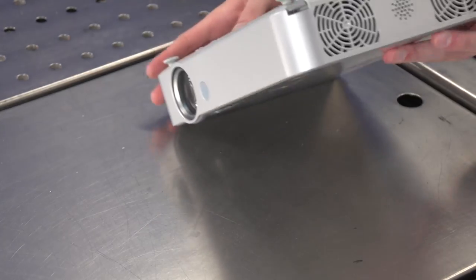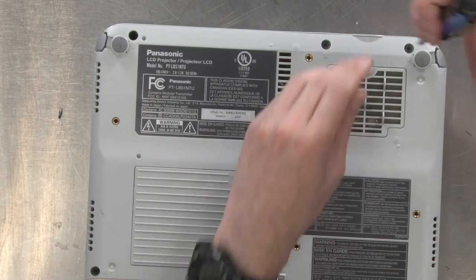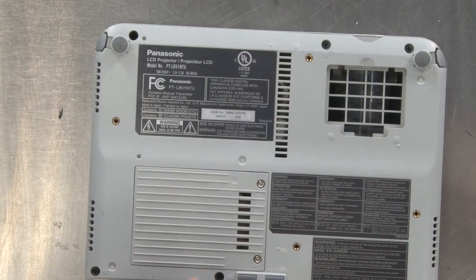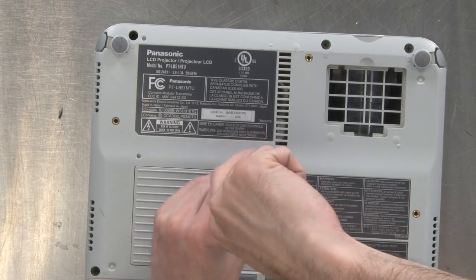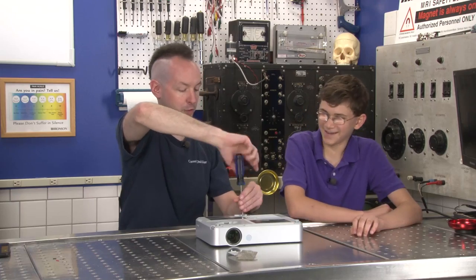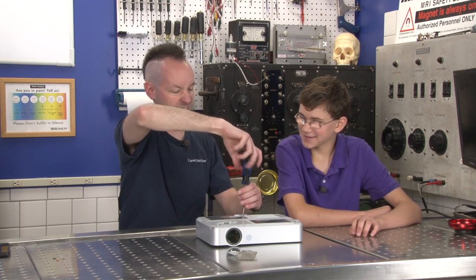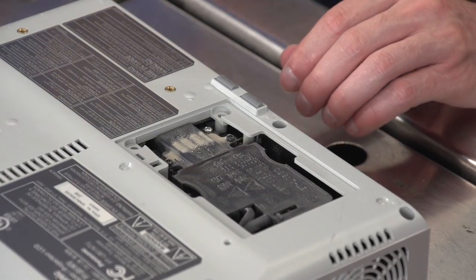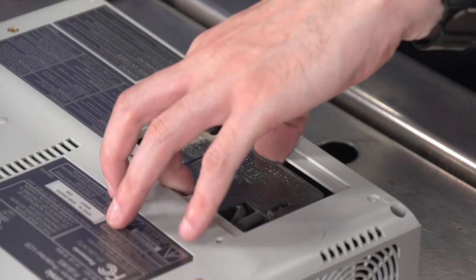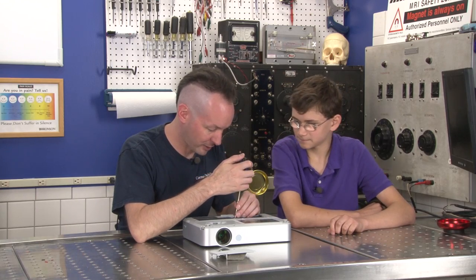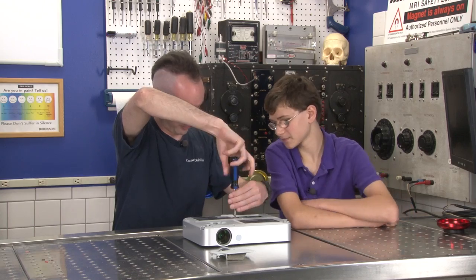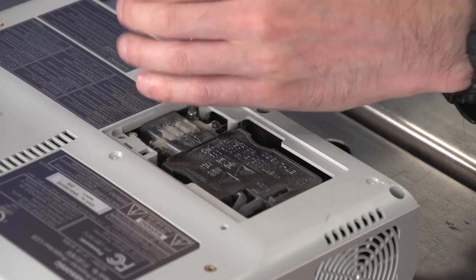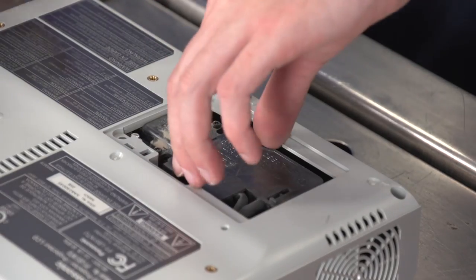So this is a Panasonic PT-LB51NT and you and I get to take it apart. So as always we flip it over and this is pretty much entirely a job for a number two Phillips. Let's open this up. Oh that's just a little vent. So this is the bulb here, I do believe. You're the one who's got half a dozen of them. You're supposed to know this stuff.